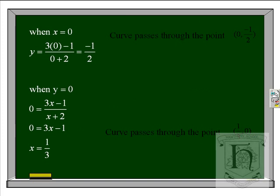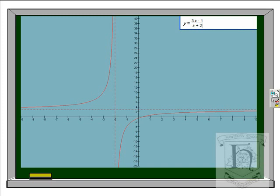We know the asymptotes and we know the crossing points on both axes. This allows us to sketch our curve. We have a horizontal asymptote, we have a vertical asymptote, we have the crossing point on the y-axis and on the x-axis.